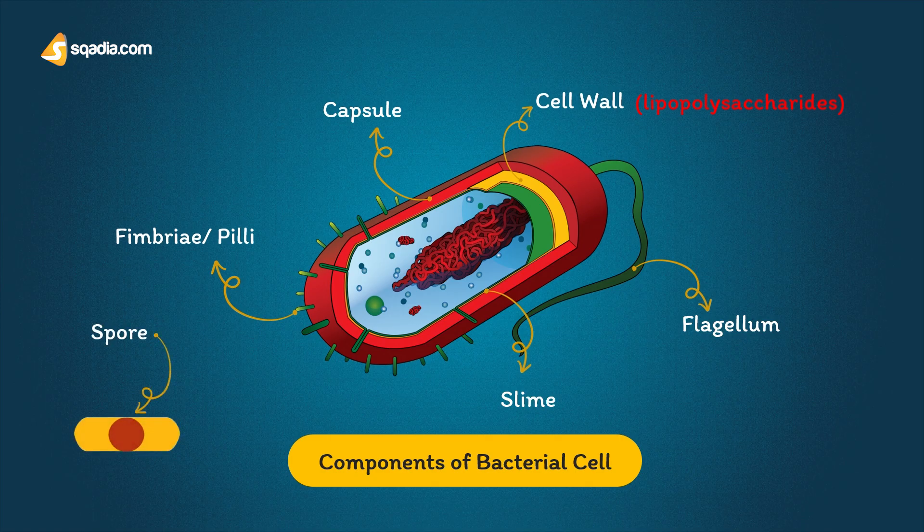The capsule is a polysaccharide layer that protects the cell from phagocytosis and desiccation. Lipopolysaccharides are surface antigens that strongly stimulate inflammation and protect gram-negative bacteria from complement-mediated lysis.